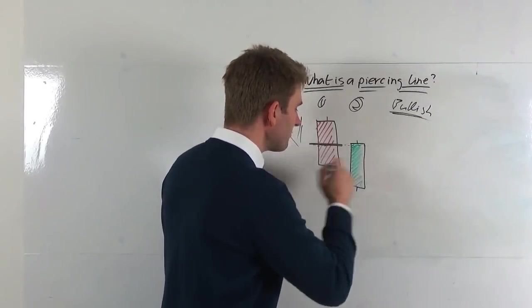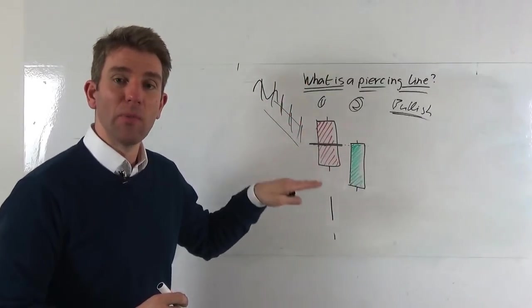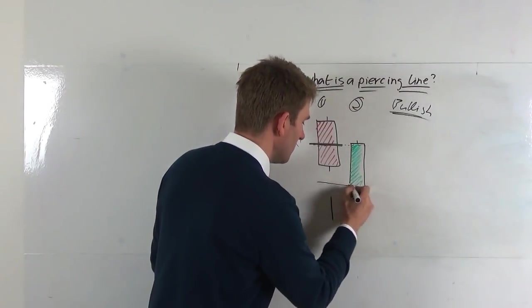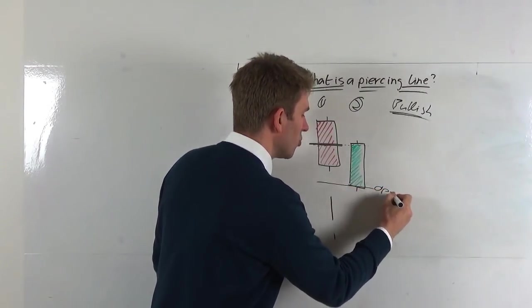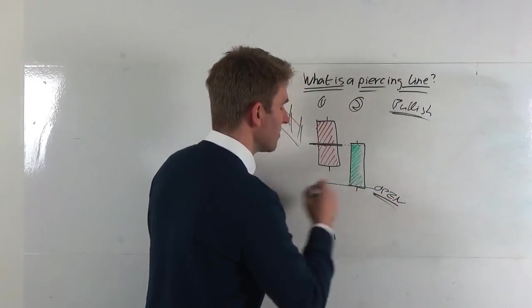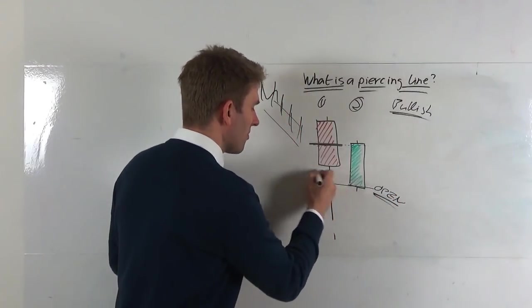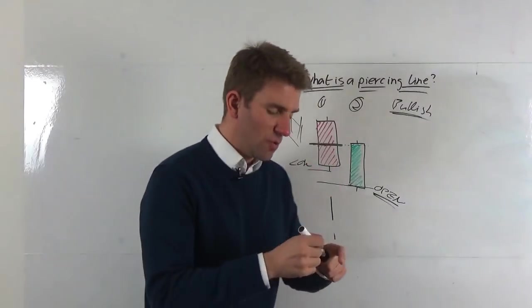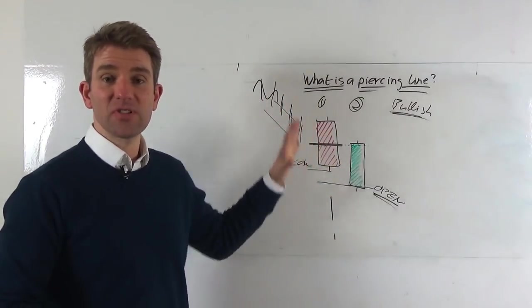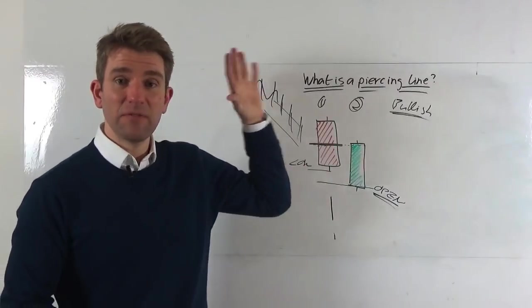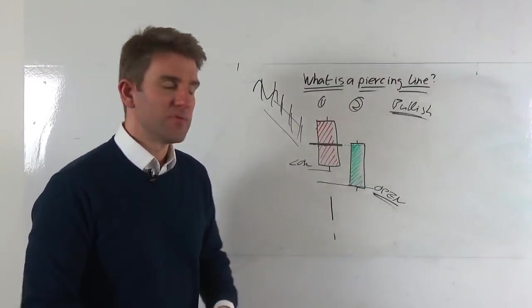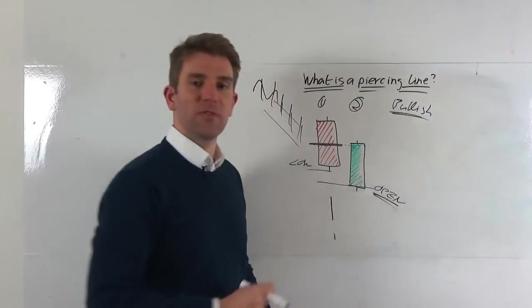Day two we then gap. We open below the low of the prior candlestick. So this is our open. Don't forget on our green or bullish candlestick there's our open and it's below the prior low. Now some people might use the close, but I like to use the low. I like to see that hey, bears are all excited, sellers are really aggressive, they've even followed through on the open. It's gapped below.